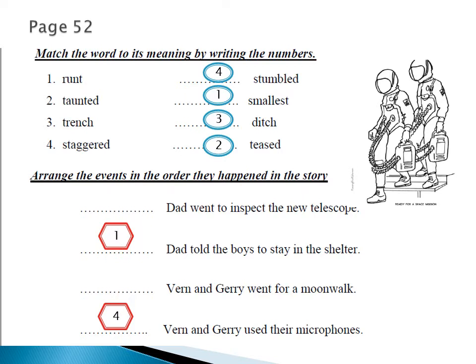We can expect that at the beginning, their dad told them to stay in the shelter before he goes to inspect the telescope. Then Verne and Jerry went for a moonwalk, and the last event is when they used their microphones to speak to each other. Please do these pages in your book.